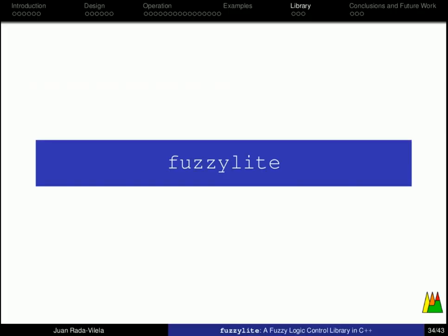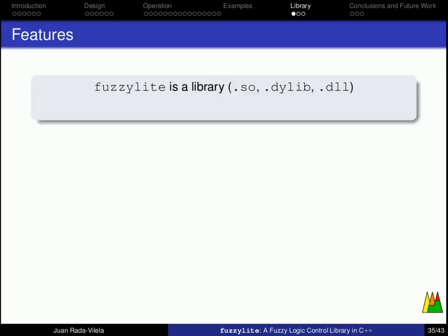So, going back to our presentation, FuzzyLite is a library. You can build it as a dynamic library, in Linux would be .so, and Mac .dylib, or in Windows, .dll. You can also build it as a static library, if you want. And Qt FuzzyLite is just a user interface that links to FuzzyLite.